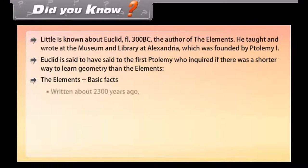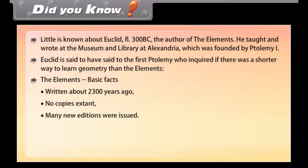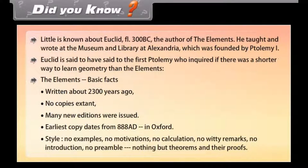The elements: Basic facts. Written about 2300 years ago. No copies extant. Many new editions were issued. Earlier copy dates from 888 A.D. in Oxford. Style: No examples, no motivations, no calculations, no witty remarks, no introduction, no preamble. Nothing but theorems and their proofs.